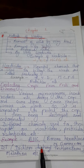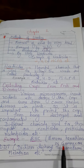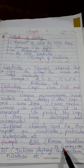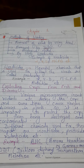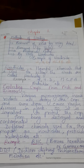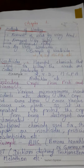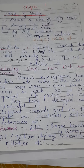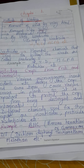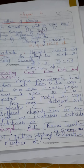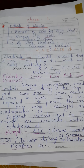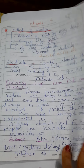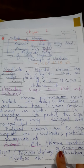Some examples of pesticides are BHC — that is benzene hexachloride, also known as gammaxene — next is DDT, that is dichloro diphenyl trichloroethane, and malathion. These are different examples of pesticides and insecticides.